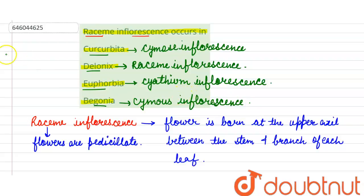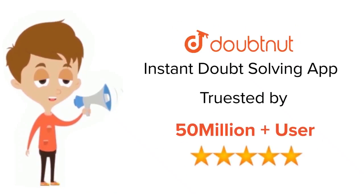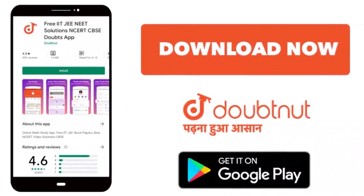So the correct answer of this question with respect to raceme inflorescence will be B option, that is Delonix. Thank you students. For class 6th to 12th, IIT-JEE and NEET level, trusted by more than 5 crore students, download Doubtnet app today.